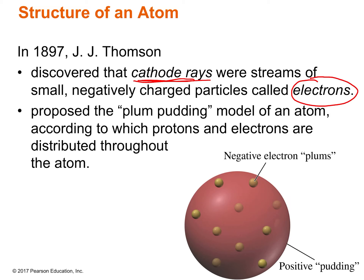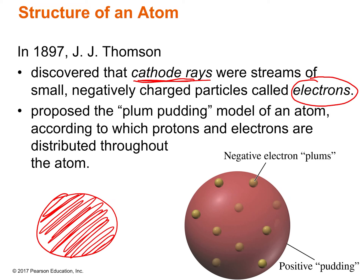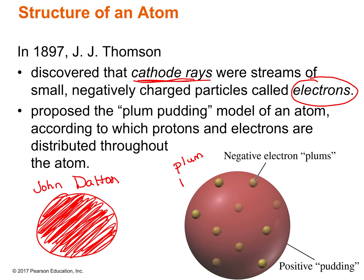He came up with this plum pudding model of the atom. This is my beautiful drawing of what John Dalton thought the atom would look like — he thought the atom was just a small, solid sphere, and that there was nothing smaller than the atom. It was a tiny, hard particle that everything was made out of. But J.J. Thompson discovered these tiny, negatively charged particles called electrons and proposed the plum pudding model.